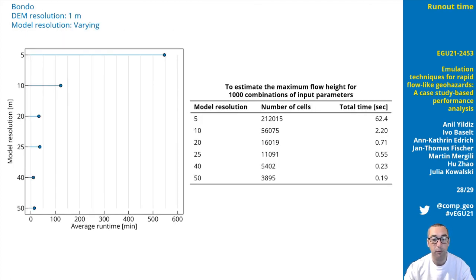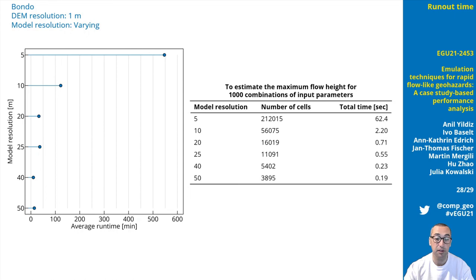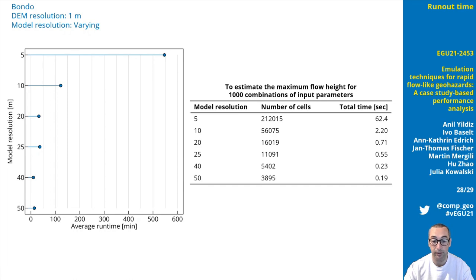Lastly, we see how much time saving the emulation techniques provide by comparing the average time for simulations and the total time of predictions. For example, an average simulation at model resolution of 5 meters takes around 900 hours. But 1,000 predictions in more than 200,000 cells for a 5-meter model resolution emulator can be made in around a minute.